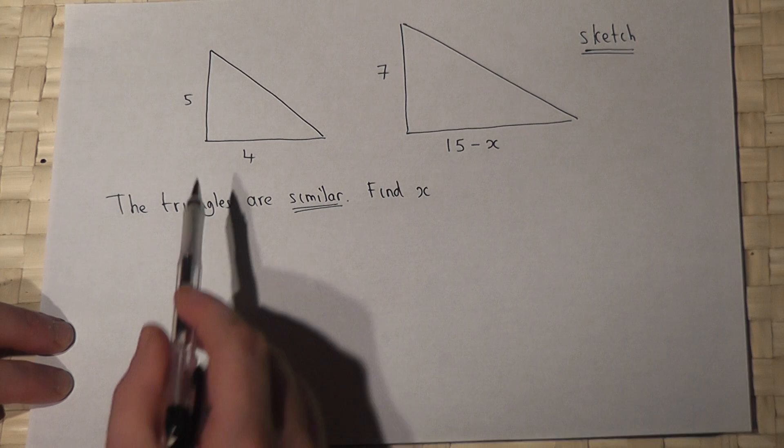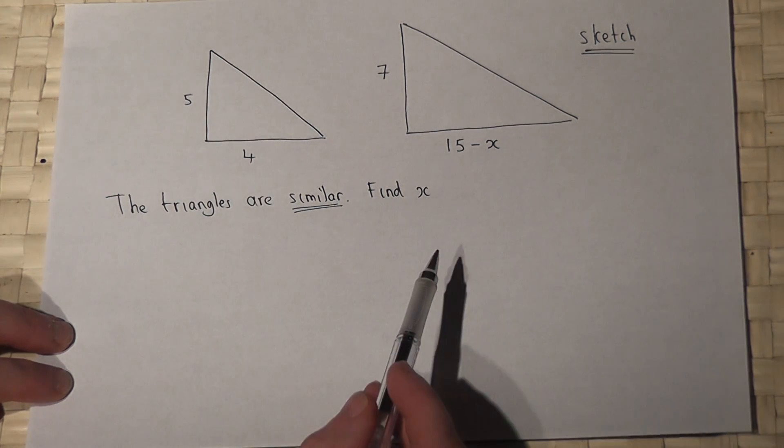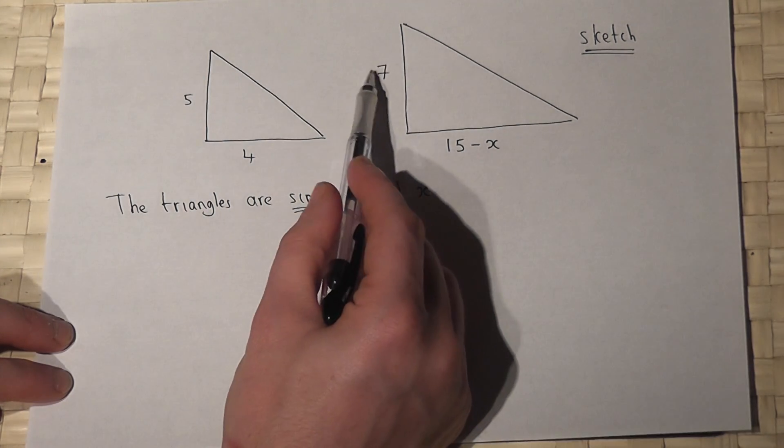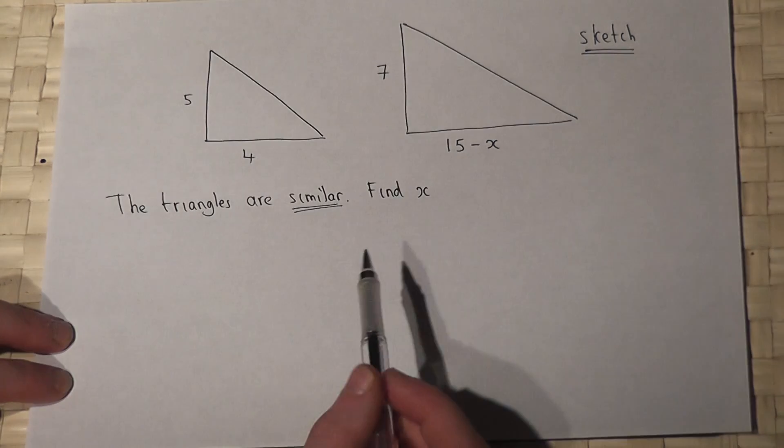If triangles are similar, that means the ratio of corresponding sides is the same.